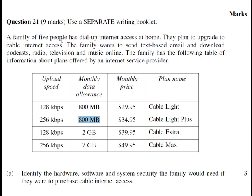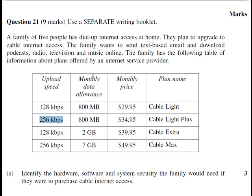Going back to our data, we can see that there are four different categories: upload speed, data allowance, price, and the plan name. The way that we start a decision tree is we first try to find common data within the table. I can already see that we have two plans with the same data allowance, and also two groupings for upload speed — either 256 or 128 kbps. So logically you should start with one of these two categories.